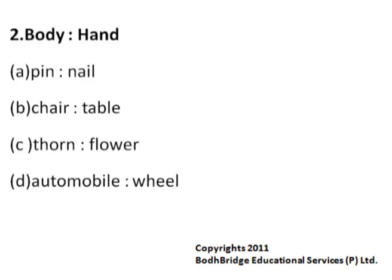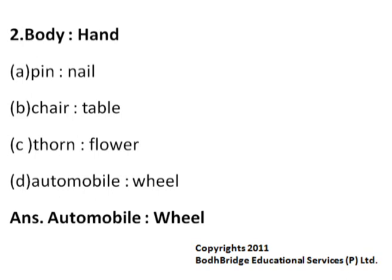Body is to Hand. The options are: Pin is to Nail, Chair is to Table, Thorn is to Flower, and Automobile is to Wheel. Hand is a vital part of the body. In the same way, Wheel is a vital part of the automobile. Hence that's the correct answer.